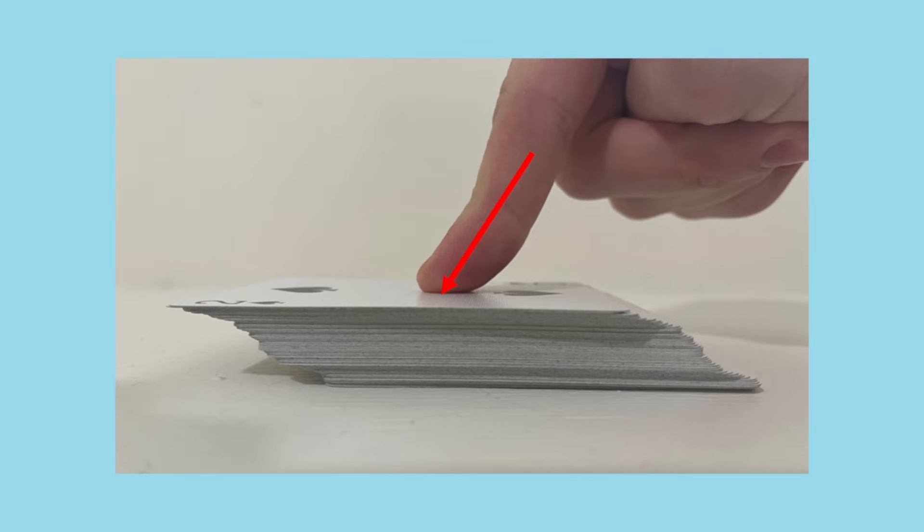Of course, you'd be right to notice that my finger is applying a force that's directed downwards as well as to the side, but only the side component, the component parallel to the card, is relevant for the shearing effect.